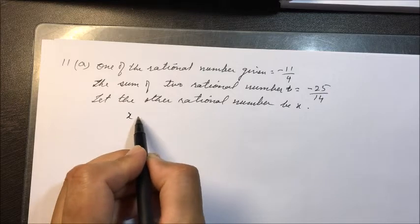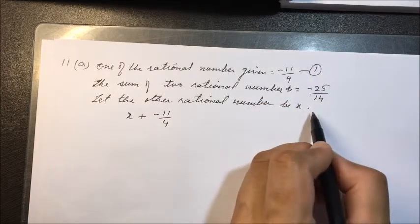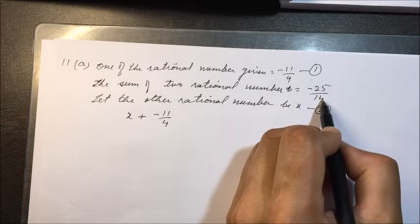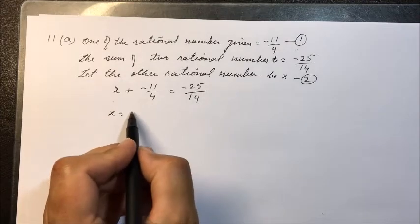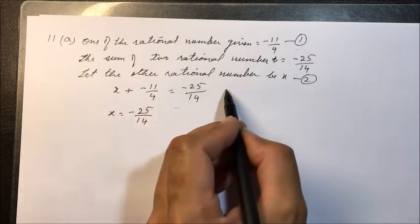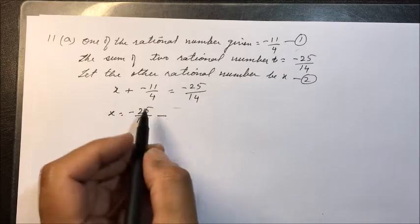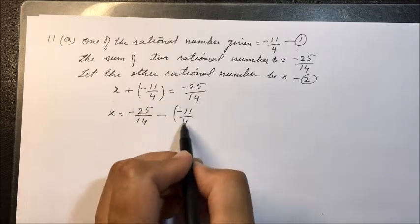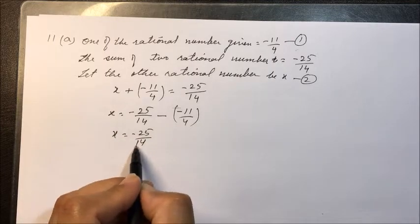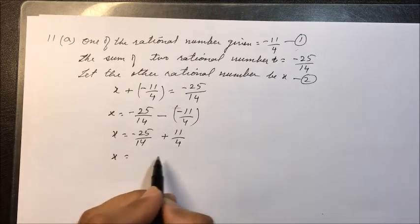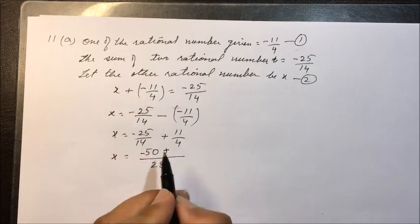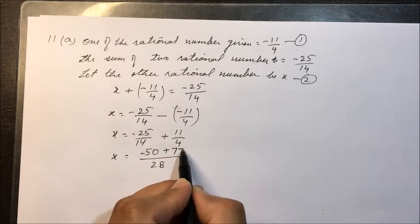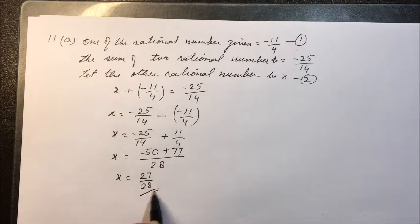Let the other rational number be x. The equation is: x plus minus 11 upon 14 equals minus 25 upon 14. So x equals minus 25 upon 14 plus 11 upon 14. Taking LCM as 28, we get minus 50 plus 77, giving x equals 27 upon 28. So the other rational number is 27 upon 28.